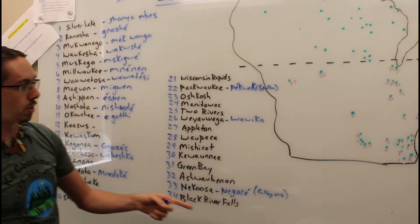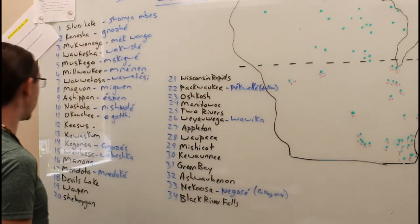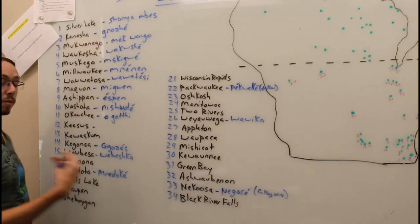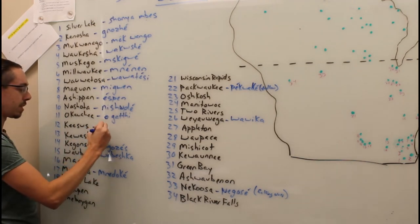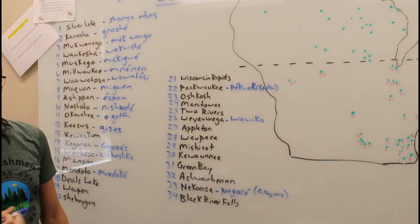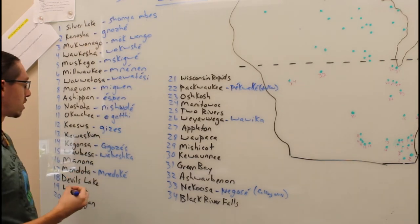Moving over to number 12, you have Kegonsa, Wisconsin, which comes from our word Geezus. Geezus is the sun or the moon, mostly the sun.